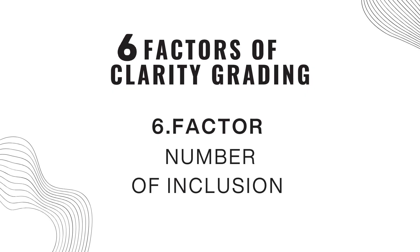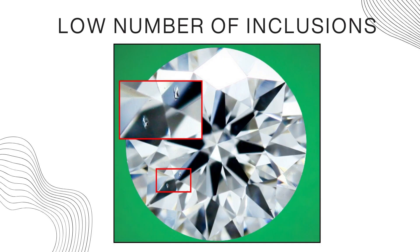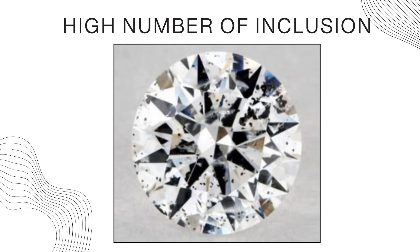The final sixth factor is number — how many inclusions are present inside a stone. If there is a low number of inclusions, the clarity grade will be higher. But if there is a high number of inclusions, the clarity grade will be lower. It is always better to have a low number of inclusions inside a stone. That's the topic for today, and I will see you in the next video very shortly. Bye bye!